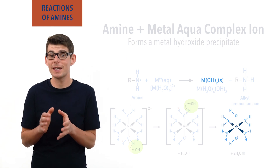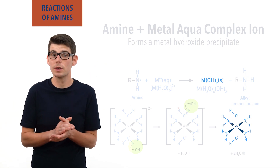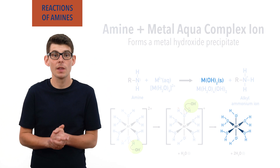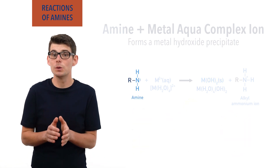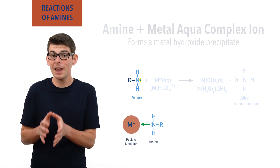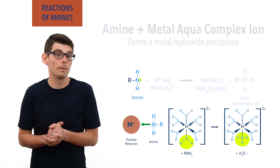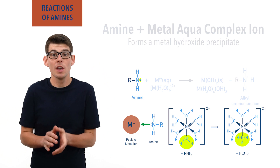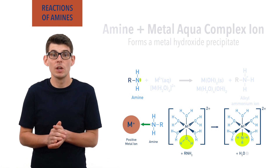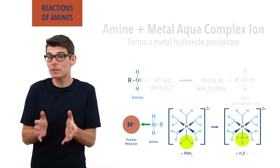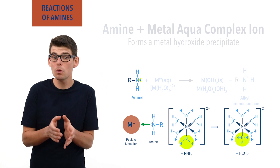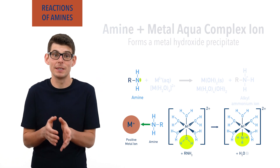Sometimes, if more amine gets added, ligand substitution reactions can occur, and amine molecules end up becoming ligands attached to the metal ion. The nitrogen in an amine is able to use its lone pair of electrons to form a coordinate dative covalent bond with the metal ion and replace a ligand already bonded to it. As amines have no charge, they are neutral ligands, and the metal aqua ion complex ends up with an overall charge again equal to that of the metal ion itself, meaning it dissolves back into solution. In other words, the precipitate formed when small amounts of amine were added re-dissolves when excess amine is added.